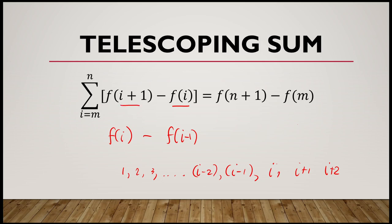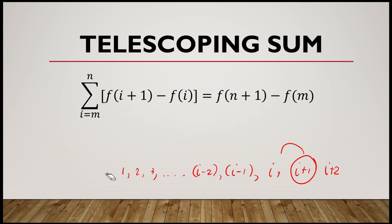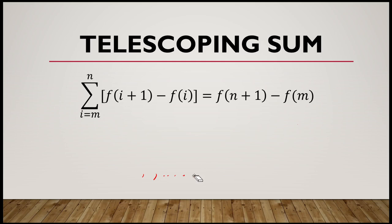The key requirement is that i+1 comes before i — meaning i+1 is the larger term. Once we can rewrite our series in that form, instead of expanding and adding all terms, the equivalent telescoping sum simplification gives us f(n+1) minus f(m). Let's solve an example to understand this.